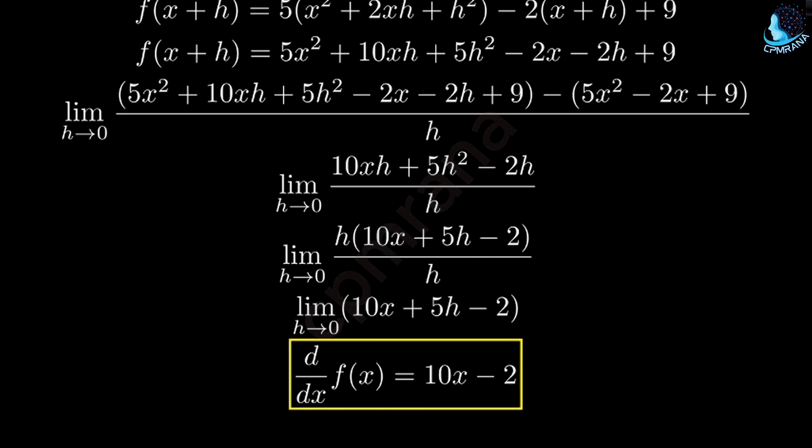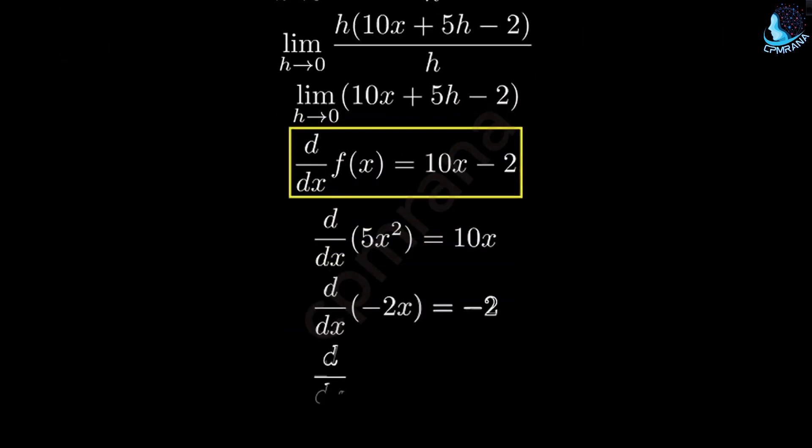To verify this makes sense, recall that the derivative of x squared is 2x and the derivative of x is 1. So, 5 times the derivative of x squared gives us 10x and negative 2 times the derivative of x gives us negative 2.